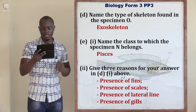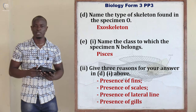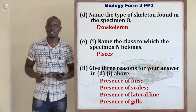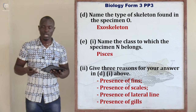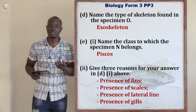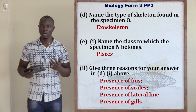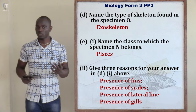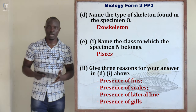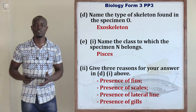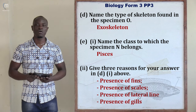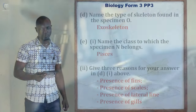The last part asks for three reasons why specimen N belongs to class Pisces. First, it has fins, visible in the diagram. Second, it has scales on its body — only fish possess scales throughout their body. Third, it has a lateral line used to detect stimuli in water such as touch, vibration, temperature, and pH. Fourth, it possesses gills found on the front side of its body.